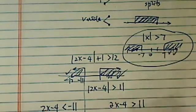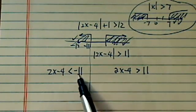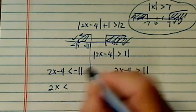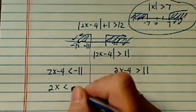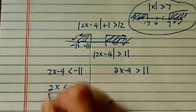So 12 is fine. So it's either smaller than minus 11 or bigger than positive 11. From here, it's really easy. We're going to just add 4 on both sides. So it's 2x less than minus 7, x is less than minus 7 over 2. That's one solution.